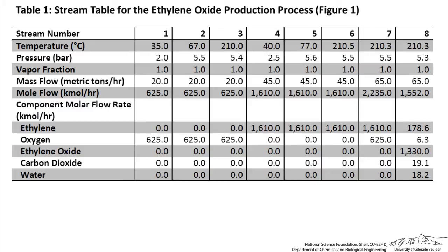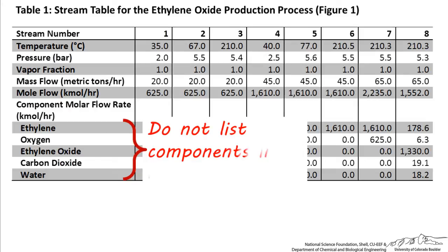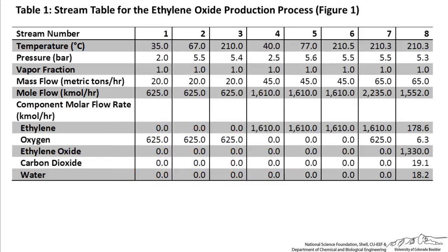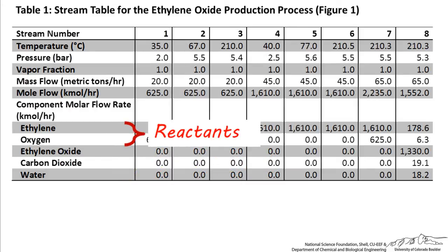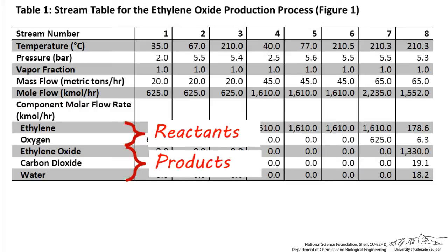Something that makes a stream or flow summary table easier to read is not listing the components in alphabetical order. It's easier to read if the components are listed as reactants first, then products. This is because it's easier to understand what's happening in each stream, especially before and after the reactor, if you put the components in this order.